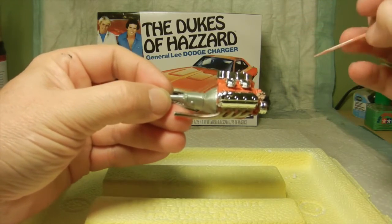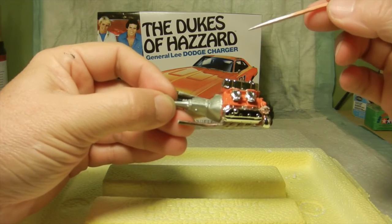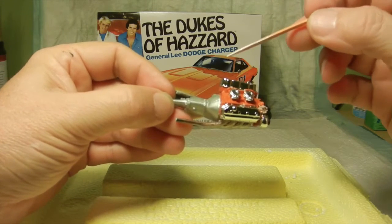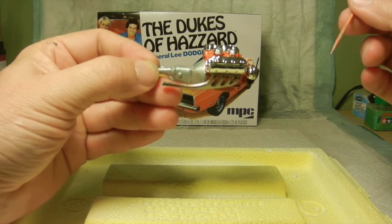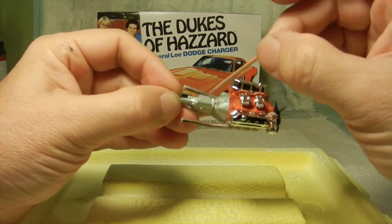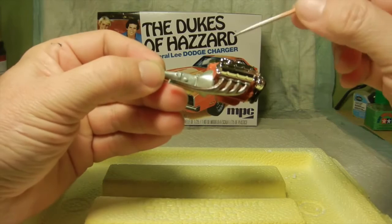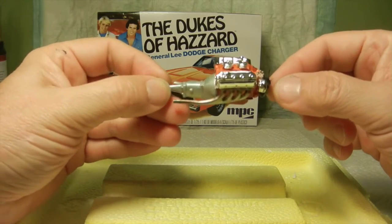As far as the transmission is concerned, same thing. I just went back over with the metallic sterling silver, and then I used some of the Folk Art metallic ice blue just to give a little bit of color to it. But that's pretty much it for the engine.